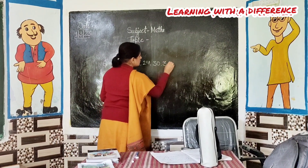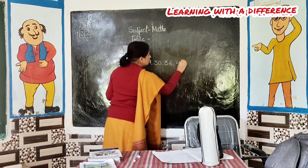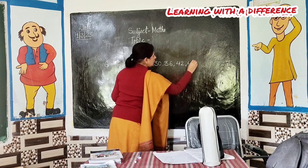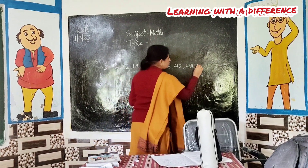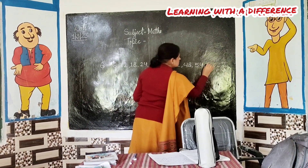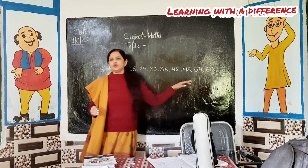6 sixes are 36. 6 sevens are 42. 6 eights are 48. Very nice. 6 nines are 54. And 6 tens are 60. Very good.